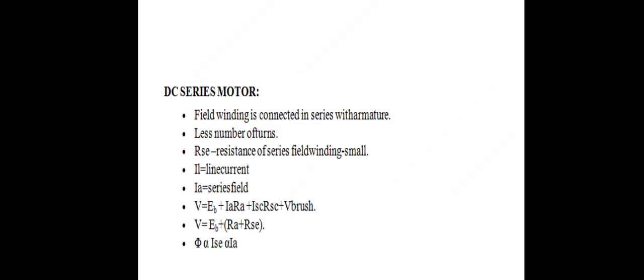DC series motor: the field winding is connected in series with the armature. A lesser number of turns are there, giving series resistance. The field winding resistance is small.